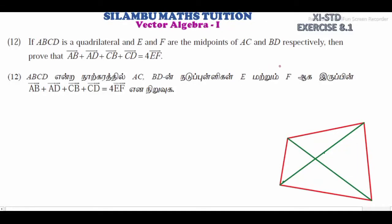Hi students, this is Samba. 11th standard, exercise 8.1, question number 12. If ABCD is a quadrilateral and E and F are the midpoints of AC and BD respectively, then prove that AB vector plus AD vector plus CB vector plus CD vector is equal to 4 times of EF vector.